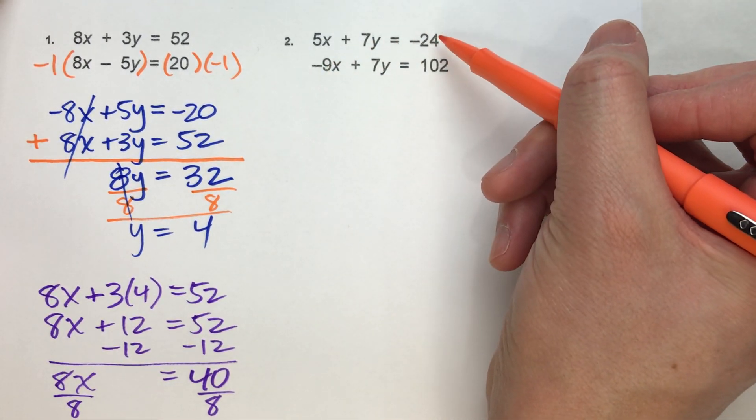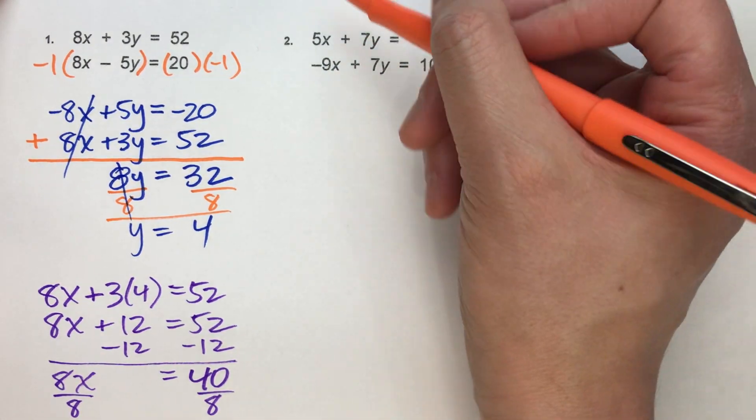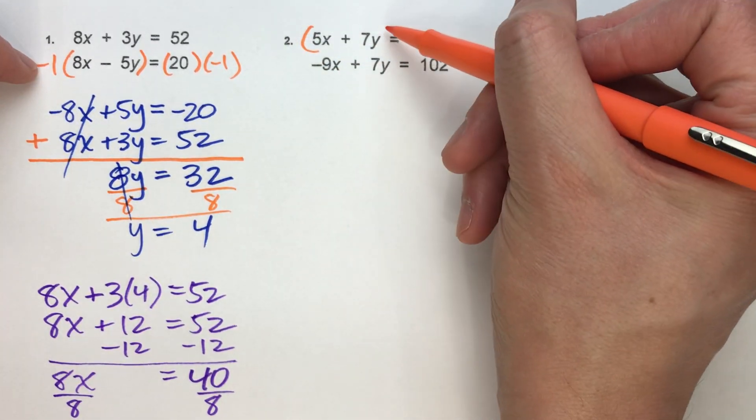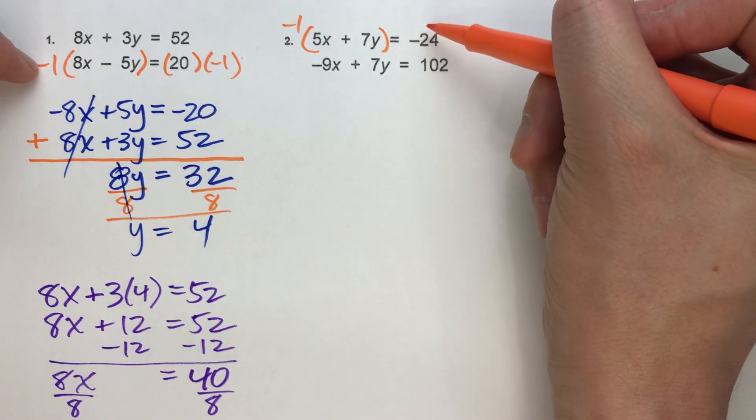This one has a negative. That one has a negative. It doesn't matter. Let's do the top one since we did the bottom one last time. So I'm going to multiply both sides by negative 1.